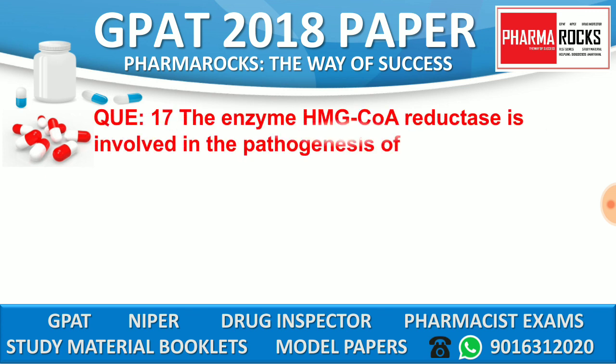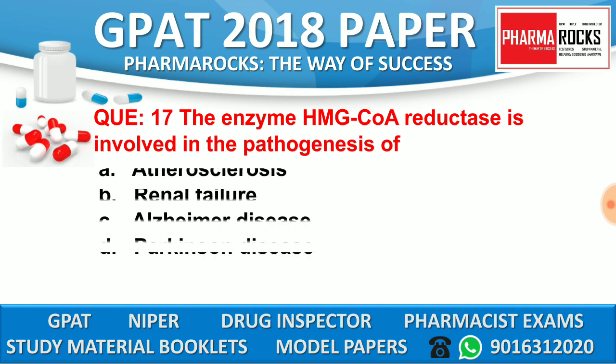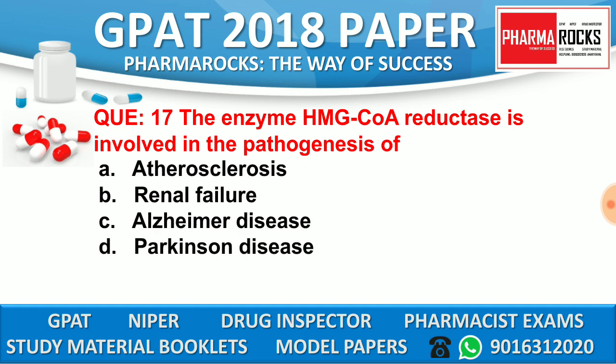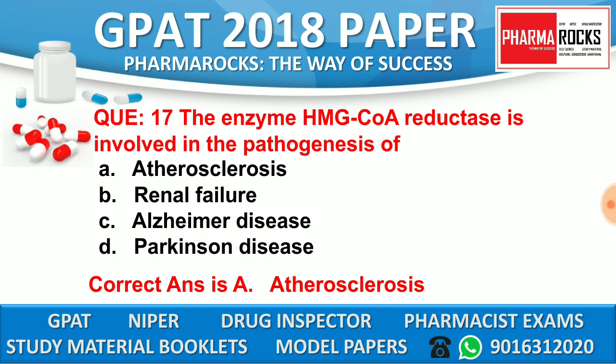Question number 17: The enzyme HMG-Coenzyme A reductase is involved in the pathogenesis of. Option A: Atherosclerosis. Option B: Renal failure. Option C: Alzheimer's disease. Option D: Parkinson's disease. The correct answer is option A, Atherosclerosis. The enzyme HMG-Coenzyme A reductase is involved in the pathogenesis of atherosclerosis.